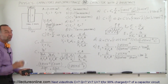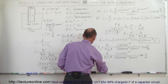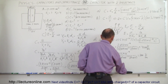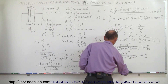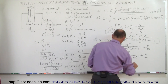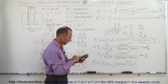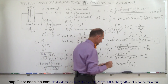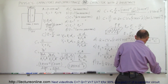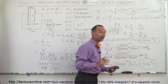Finally, part F: how much energy is stored? The energy U = ½·Q·V = ½ × 2.655×10⁻⁹ × 10 = 1.33×10⁻⁸ joules. That is the energy stored on the capacitor with the dielectric.